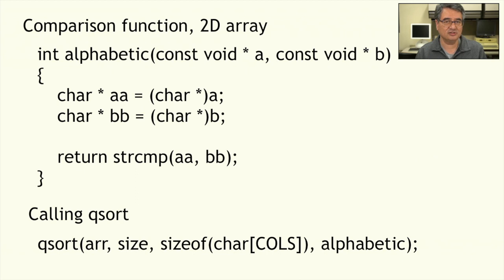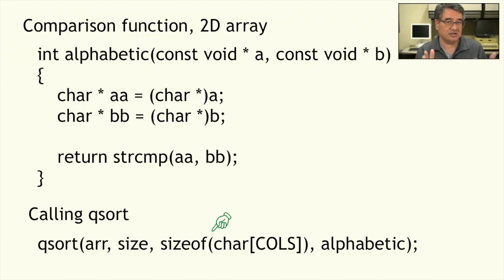When we call the qsort function, we still pass in four parameters. The first is the array to be sorted. The second is the number of elements in the array — here it's the size of the array, or five. The third parameter is the width of each element — here it's a character array of ten characters. And the fourth parameter is the name of the comparison function. As it's working, qsort will be copying the strings themselves within the array, but when it's done, the array will be sorted from least to greatest.